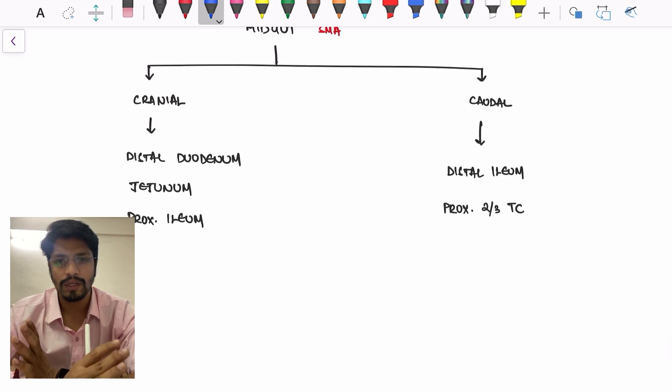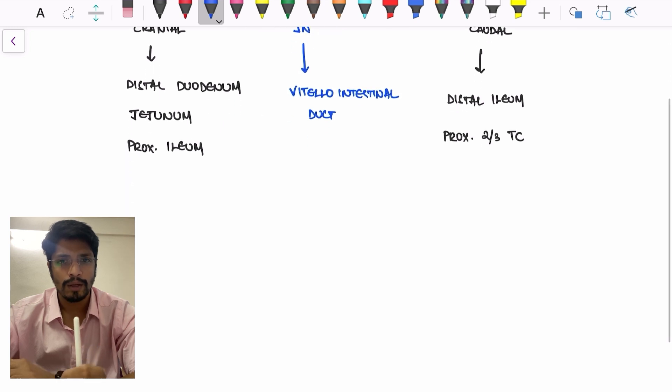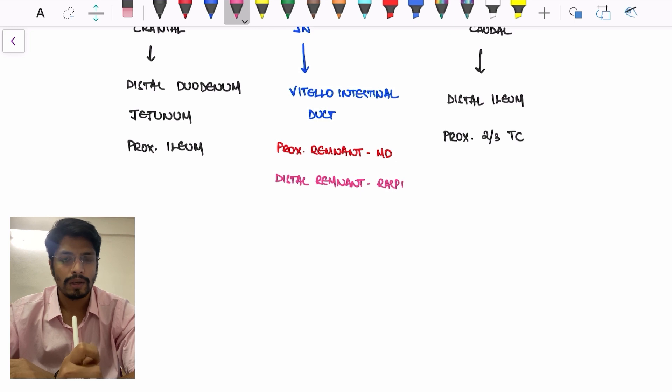The junction between the cranial end and caudal end will be the vitellointestinal duct. The remnant of vitellointestinal duct proximally will be Meckel's diverticulum. If it is distally remnant, it is the raspberry tumor, also known as the periumbilical nodule.